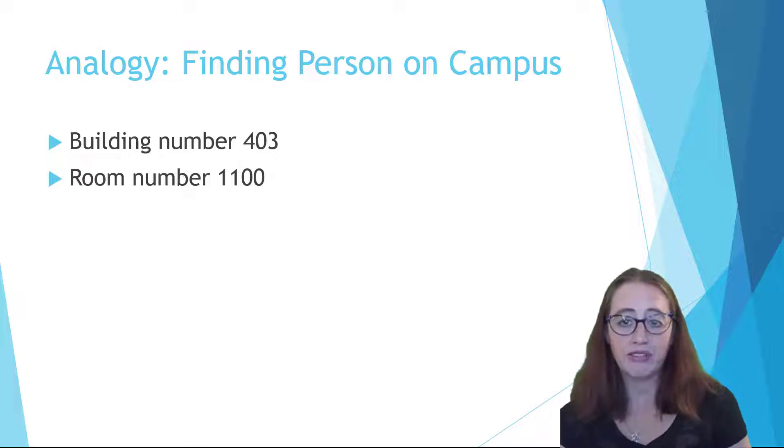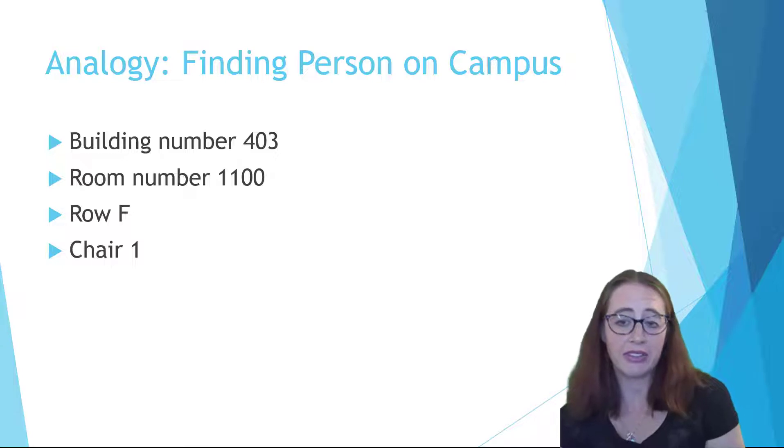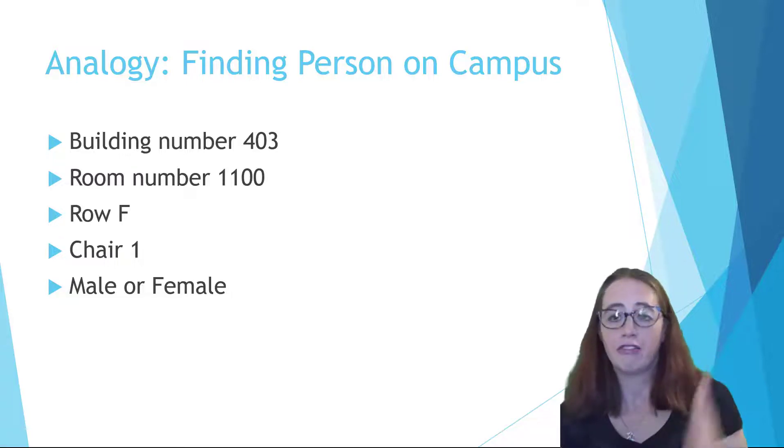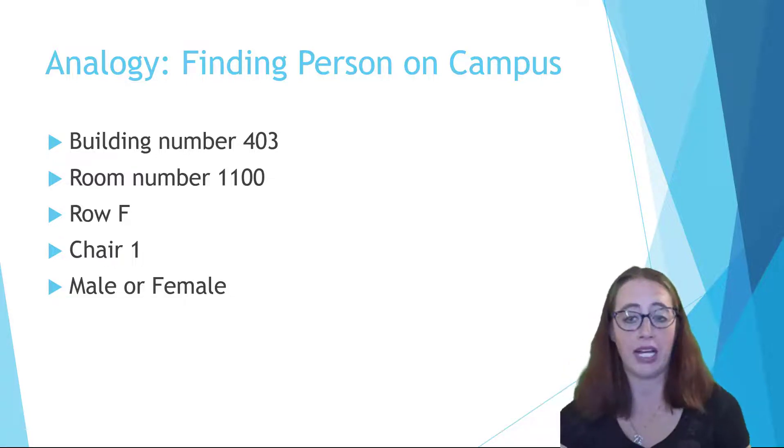It's also worth noting that other buildings might have a room 1100, so we need both values to know which 400 students we are talking about. Now we could get more specific and say row f and we are describing perhaps 10 students. Again, without the first two numbers, f is very unspecific. Even more specific and say chair number one. Now we're describing one person. We can then further describe the person by saying are they male or female. This is a good starting point for an analogy for how quantum number logic works.